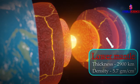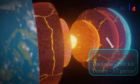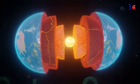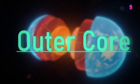It is very hot and its density is higher than the upper mantle. The next layer of the Earth is called the outer core.